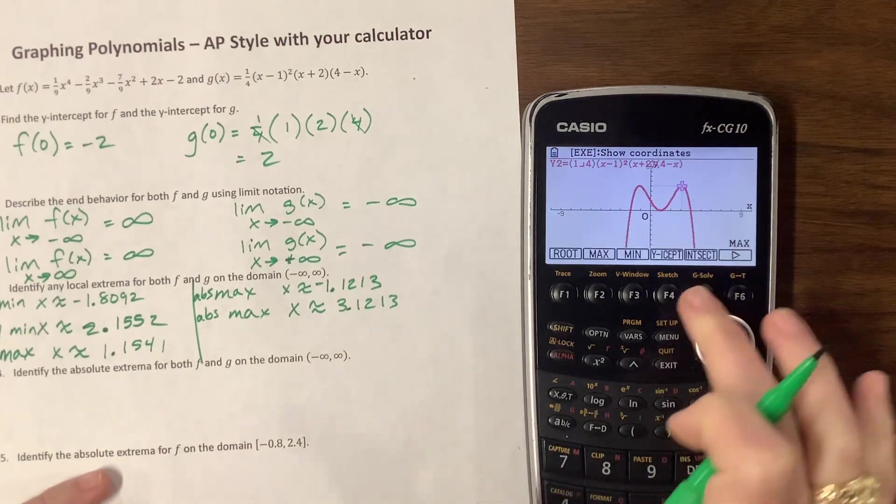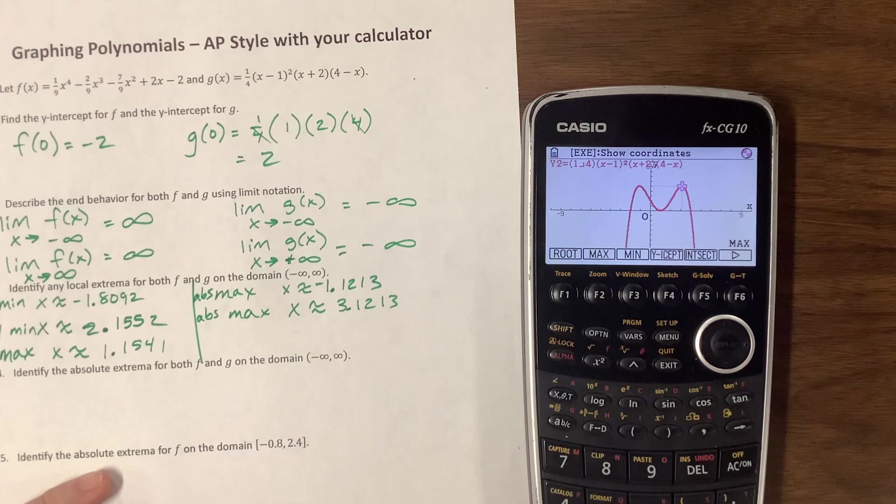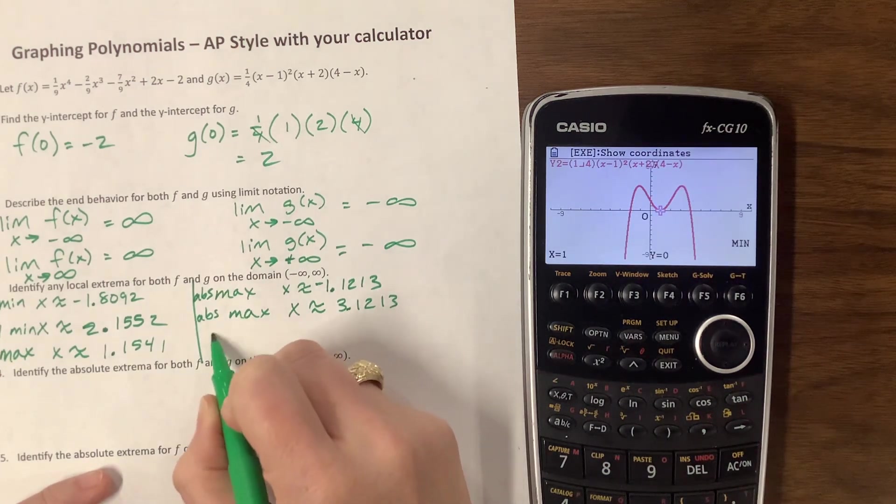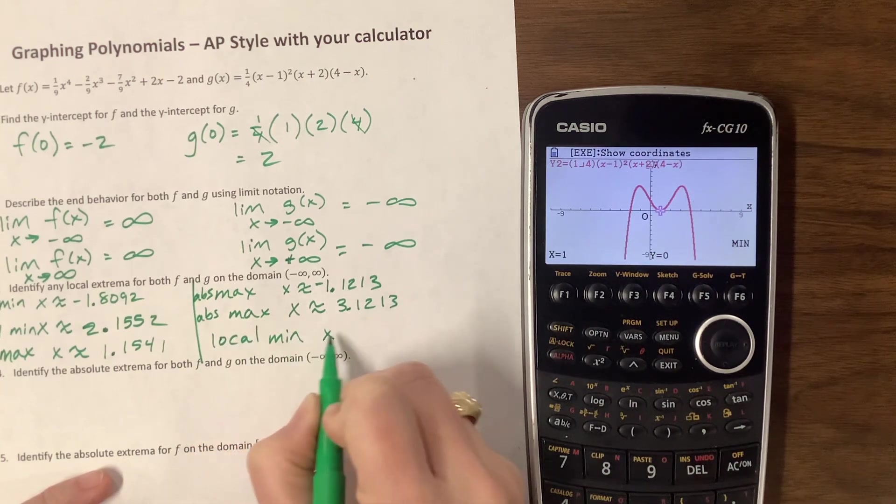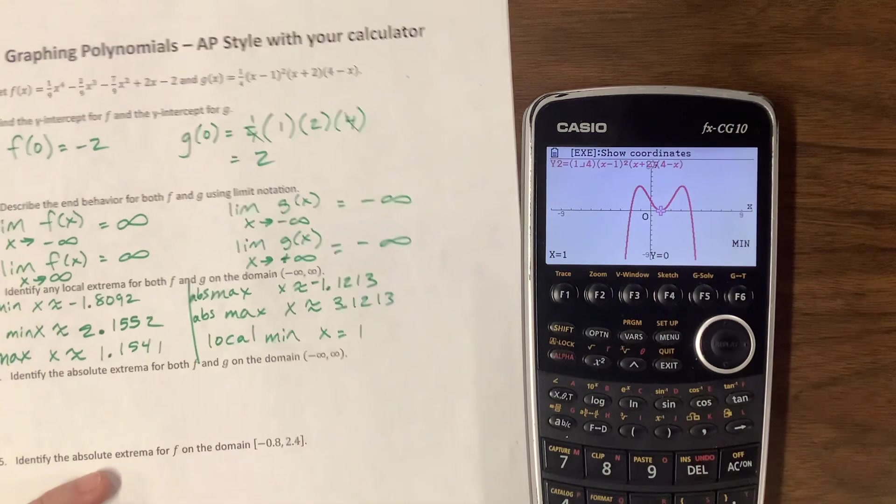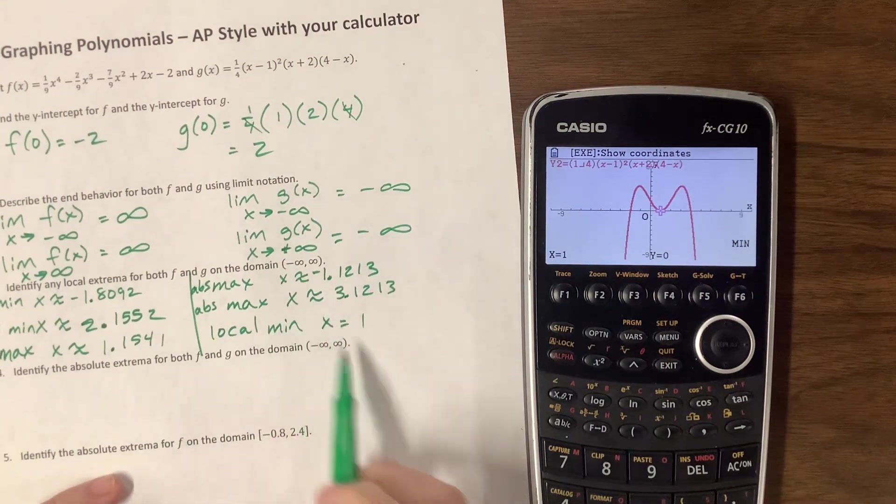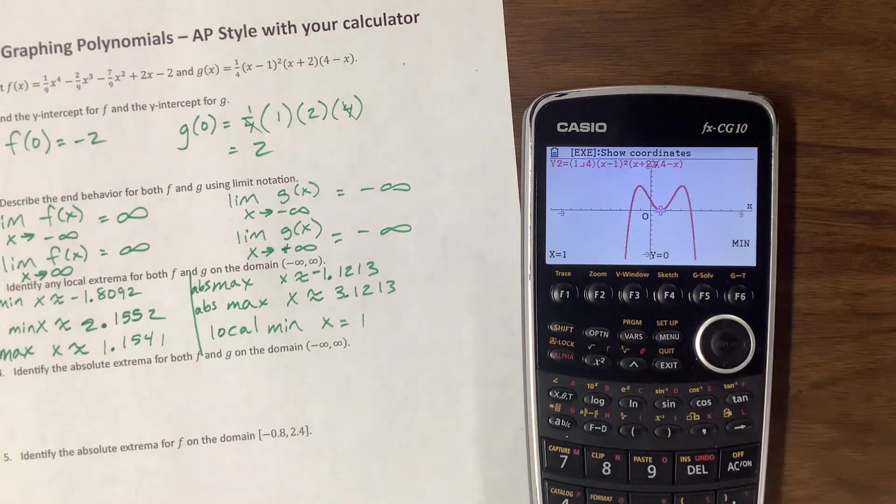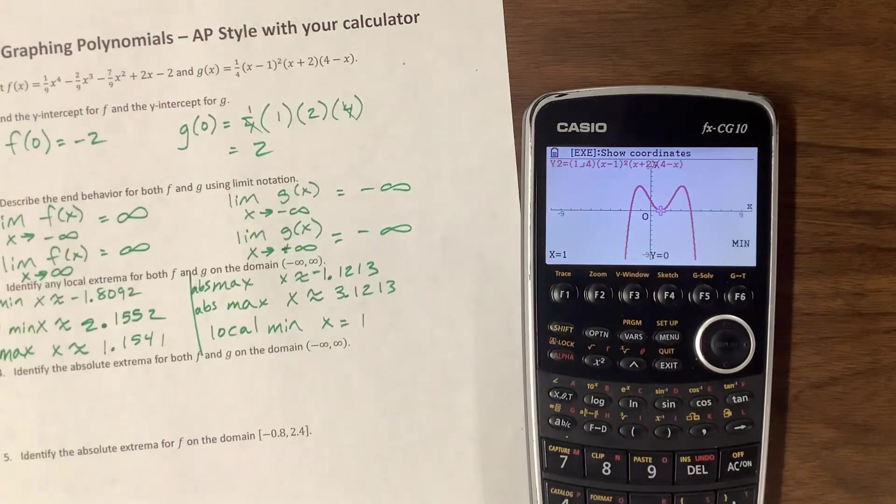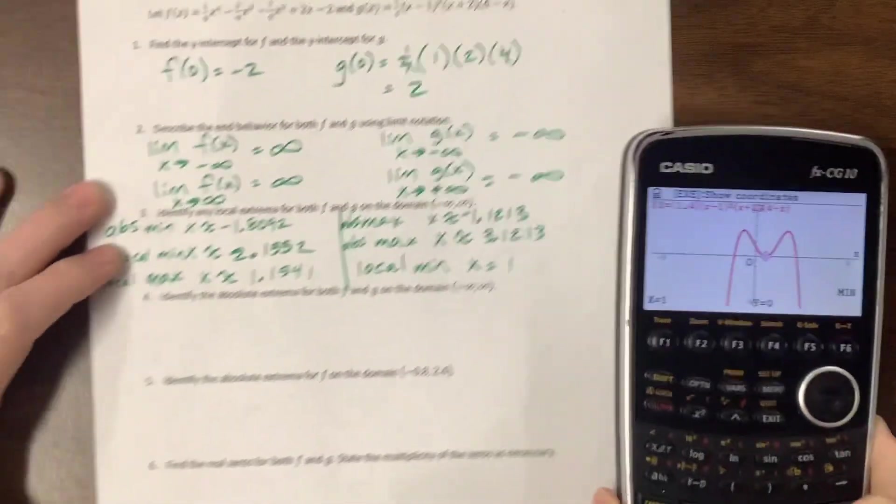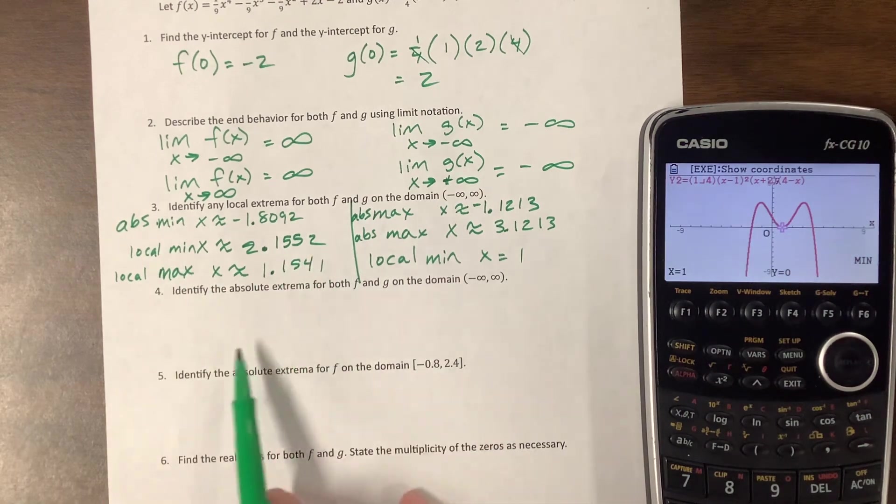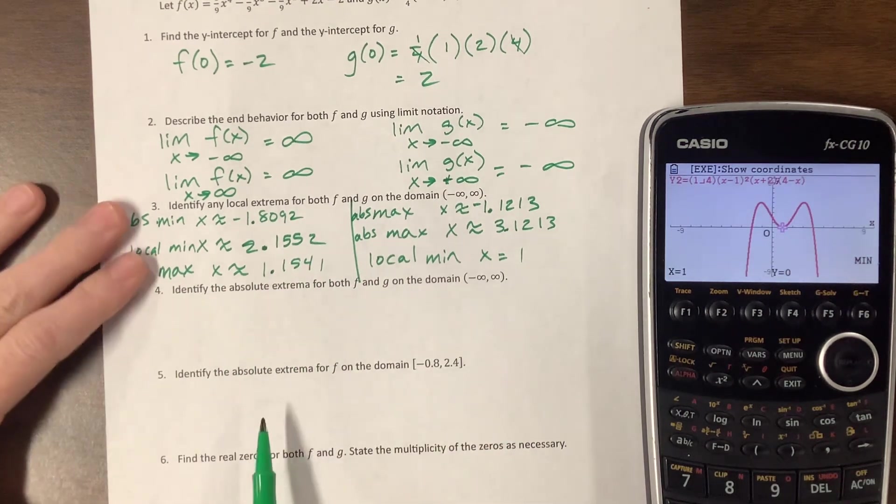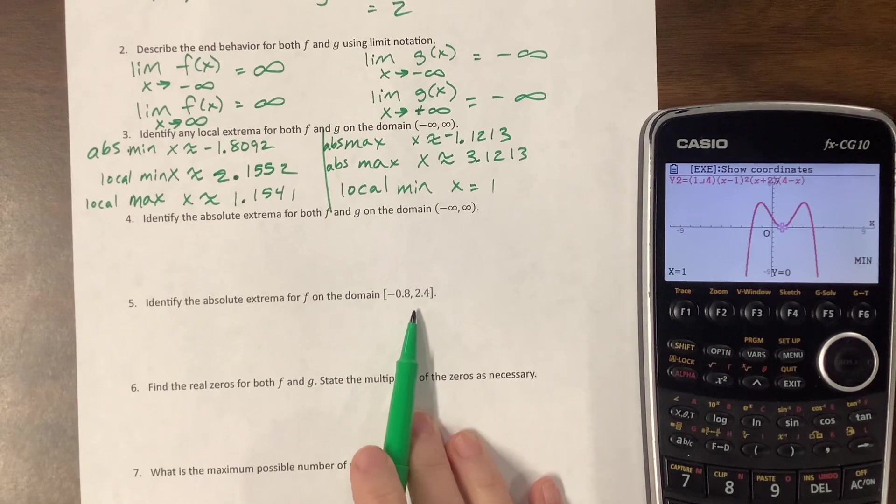Then we can go g-solve minimum. I think it's that zero. So we have a local min when x is equal to one. Notice I'm using approximately versus equal, but that was also the zero. We could see it in the factored form, which was convenient. So the absolute extrema, guess what? I kind of already did that.